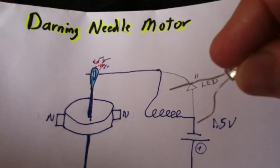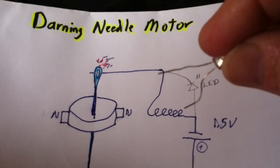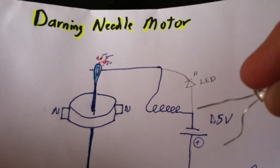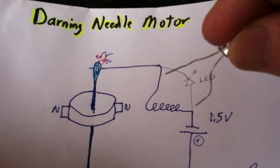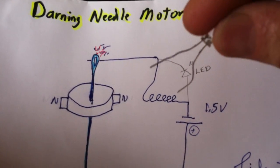When the coil magnetic field collapses, the flyback goes back this way at a higher voltage than the one and a half volts and illuminates the LED.